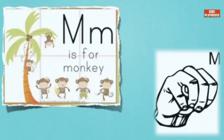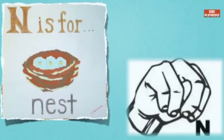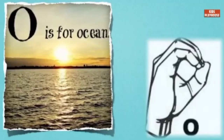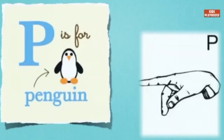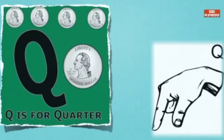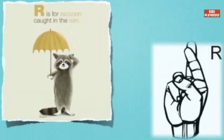M is for monkey. N is for nest. O is for ocean. P is for penguin. Q is for quarter. R is for raccoon.